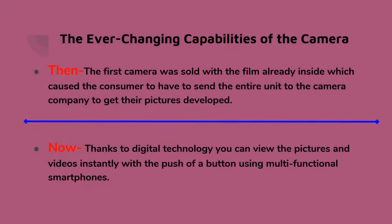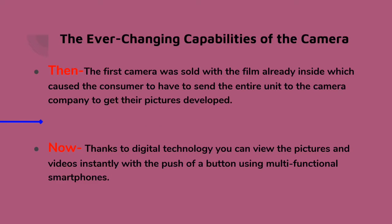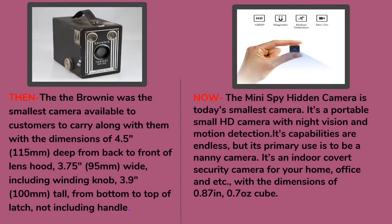The first cameras were sold with film already inside, which caused the consumer to send the entire unit to the camera company to get their pictures developed. The Brownie was the smallest camera available for customers to carry, with dimensions of 115 millimeters deep from back to front of the lens hood, 95 millimeters wide including the winding knob, and 100 millimeters tall from the bottom to the top of the latch, not including the handle.